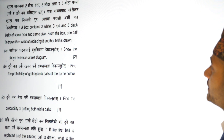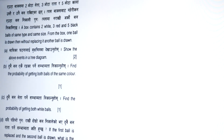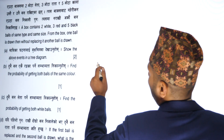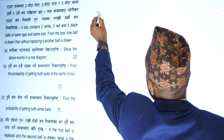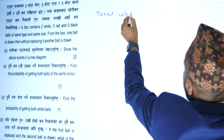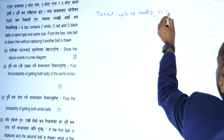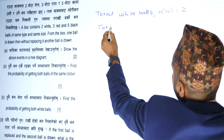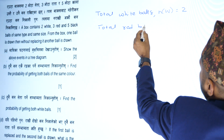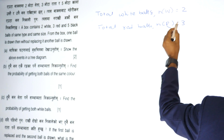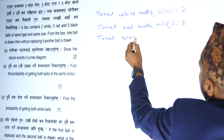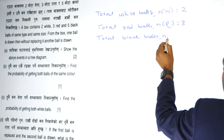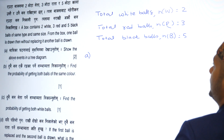Next, a probability question. A box contains 2 white, 3 red, and 5 black balls of the same type and same size. From the box, one ball is drawn, then without replacing it, another ball is drawn. We will show the events in a tree diagram.